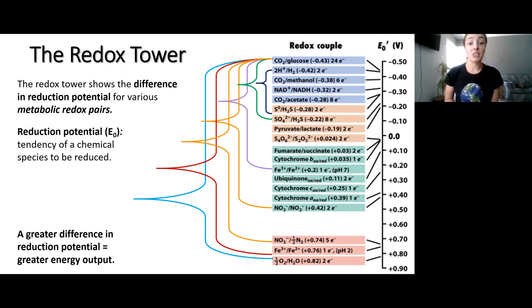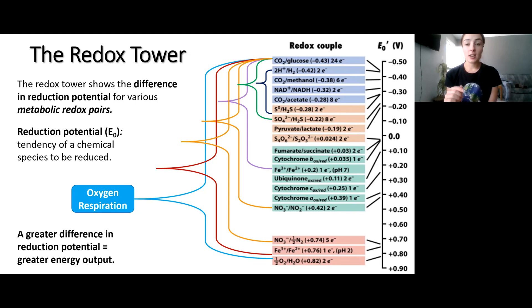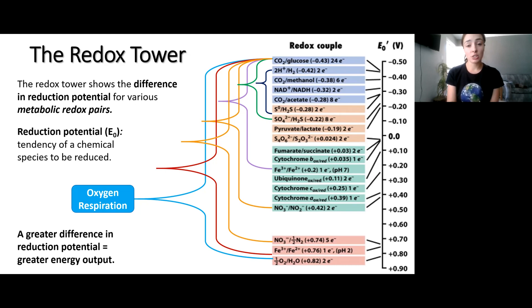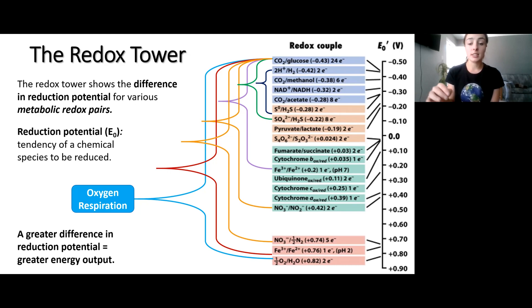For example, oxygen respiration gets a lot of energy yield because it has such a large difference in redox potential between the electron donor and acceptor — you can see they're on opposite ends of this tower. I want to warn you that these pathways don't always have to use glucose as an electron donor or organic carbon at all. There are microbes that use inorganic electron donors like hydrogen, for example. I'm just using glucose as an organic carbon electron donor example for all of these pathways, to show how the redox potential differences relate to the different metabolic pathways.